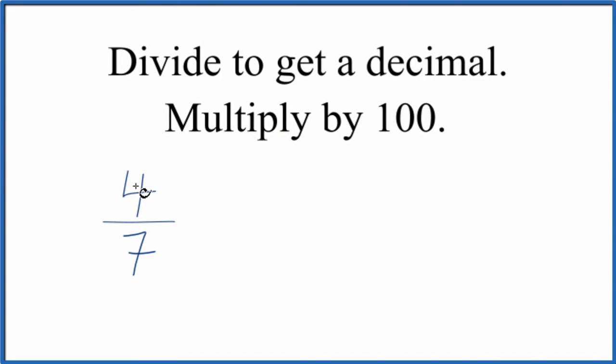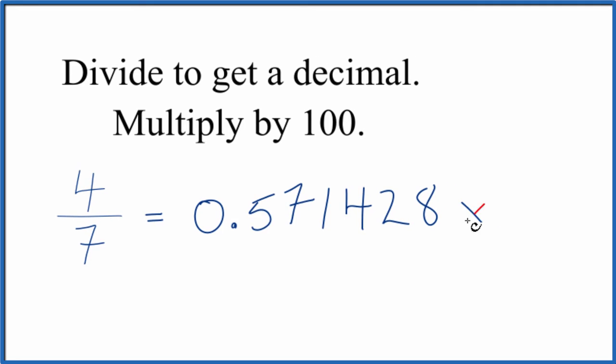So again, we divide 4 by 7—you can do that by hand or use a calculator—you end up with a decimal. And this number just keeps repeating. We're going to take this and multiply that by 100.